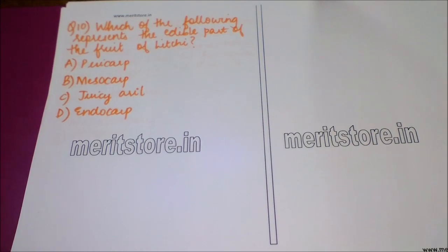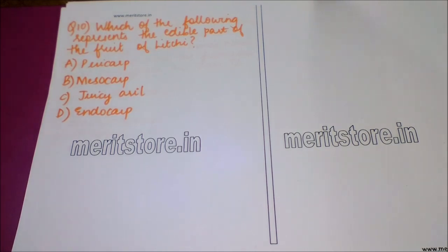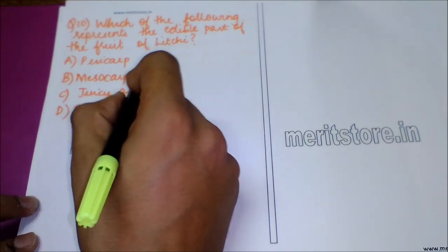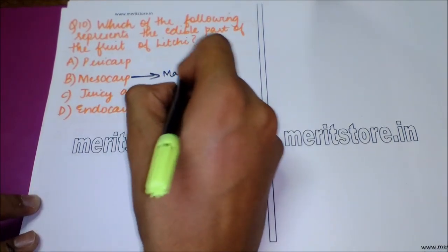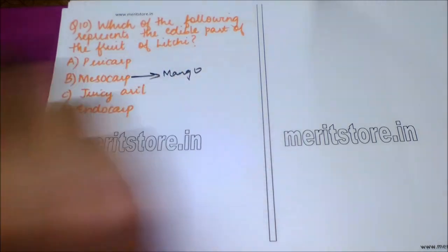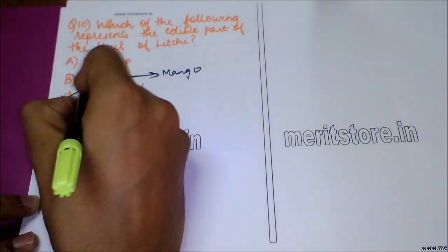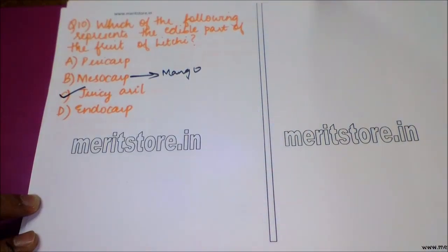The next question is: which of the following represents the edible part of the fruit of lychee? Option A: pericarp. Option B: mesocarp. Option C: the juicy aril. Option D: the endocarp. Although generally the mesocarp is the edible part — as in mango — in the case of lychee the juicy aril is the edible part. The answer is option C.